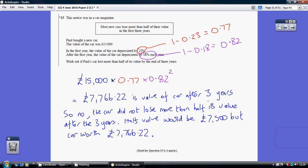So the value after one year is £15,000 × 0.77. Now in years two and three it loses a further 18% each year. So the value that it holds is 1 - 0.18 = 0.82. For year two we multiply by 0.82.